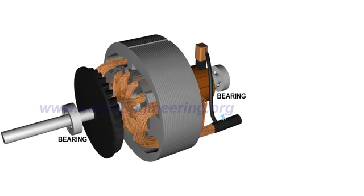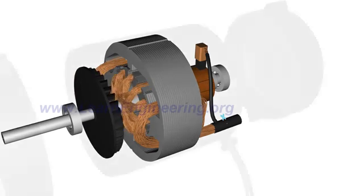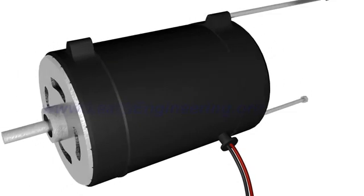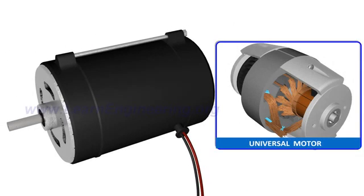One of the interesting variations of the DC motor is a universal motor, which is capable to run under both AC and DC power sources. To know more about it, please check the next video. Thank you.